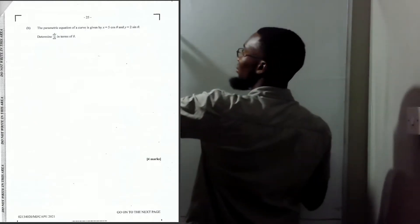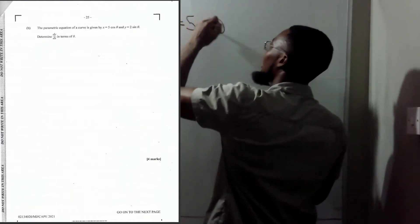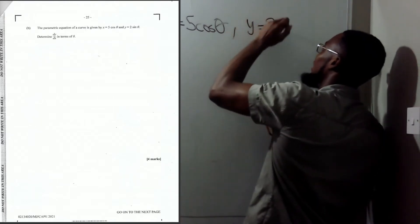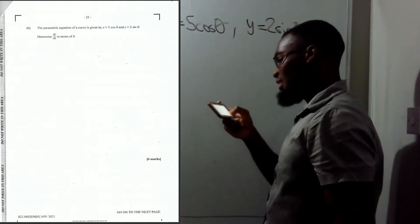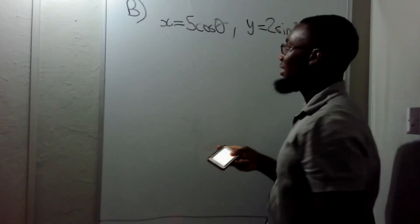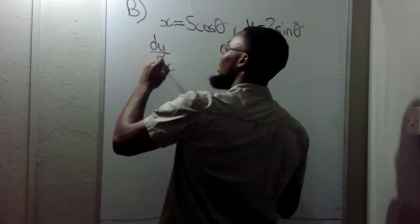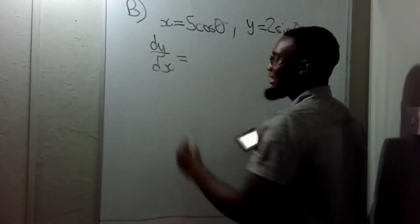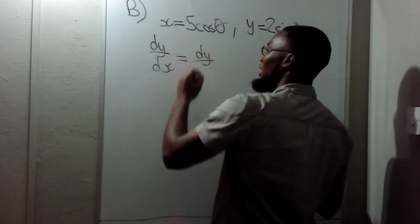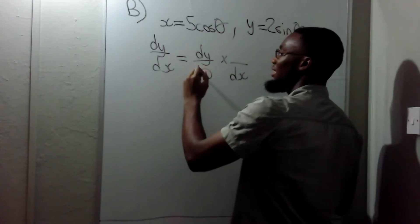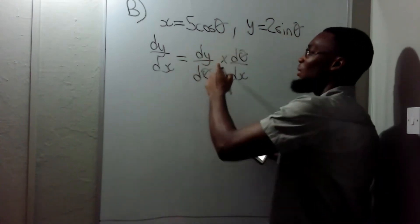The next part gives us parametric equations: x = 5cos(θ) and y = 2sin(θ). We need to find dy/dx. Using the chain rule, dy/dx equals dy/dθ times dθ/dx.